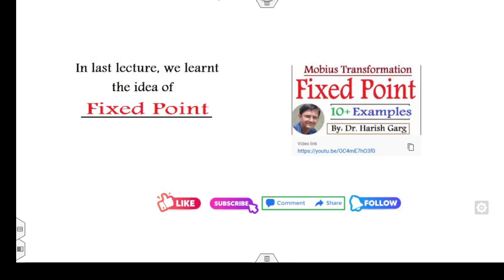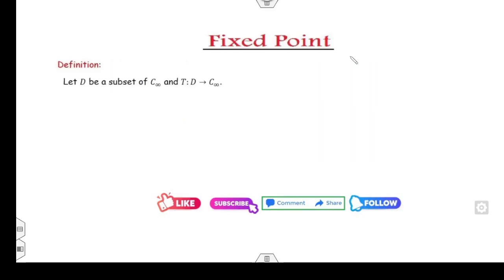Now, what we have discussed so far: we have learned the idea of the fixed point in our last lecture. If I quickly recall the concept, if you have the subset of the extended complex plane — what is C∞? C∞ is a collection of all elements of C and the infinity point.